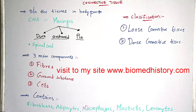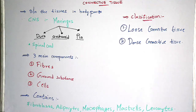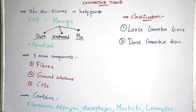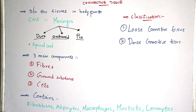Coming to macrophages — macrophages are a type of white blood cells (WBCs). They are mainly seen in the immune system of our body, not only in humans but also in animals. They help in the digestion of foreign materials such as microorganisms which attack our human body.